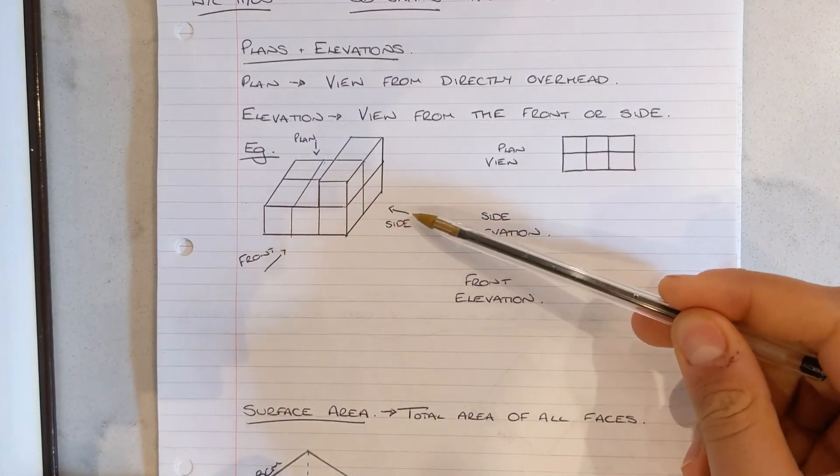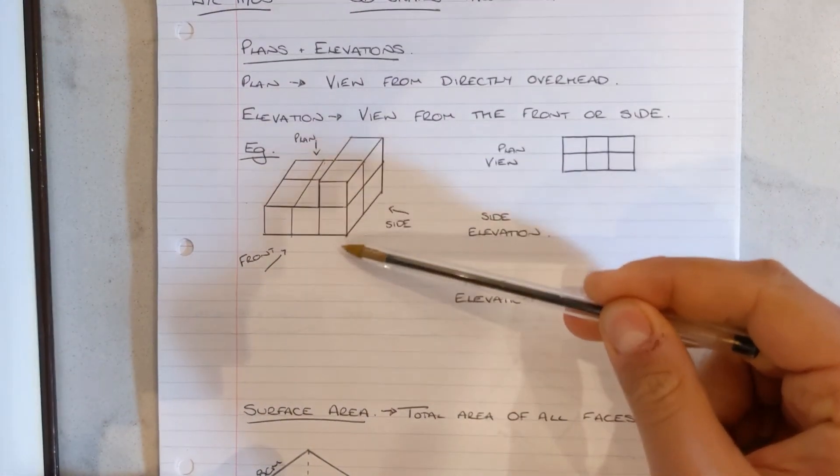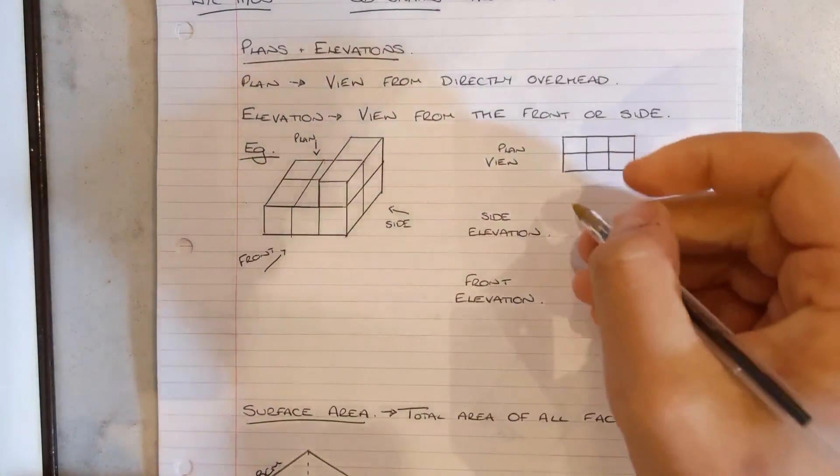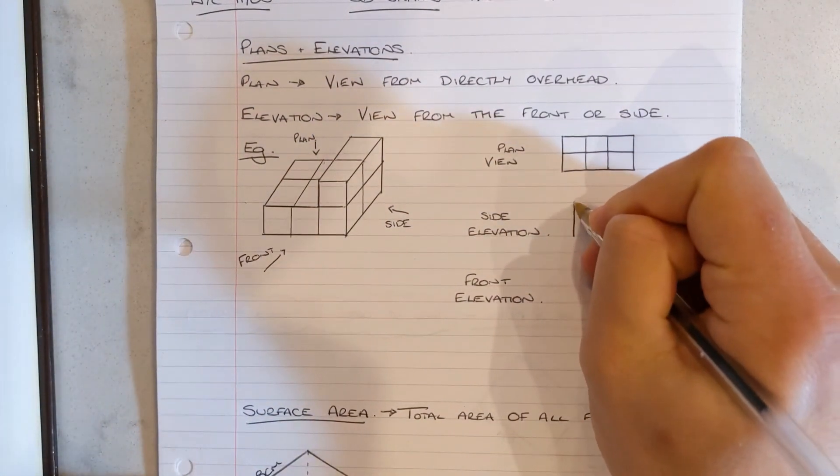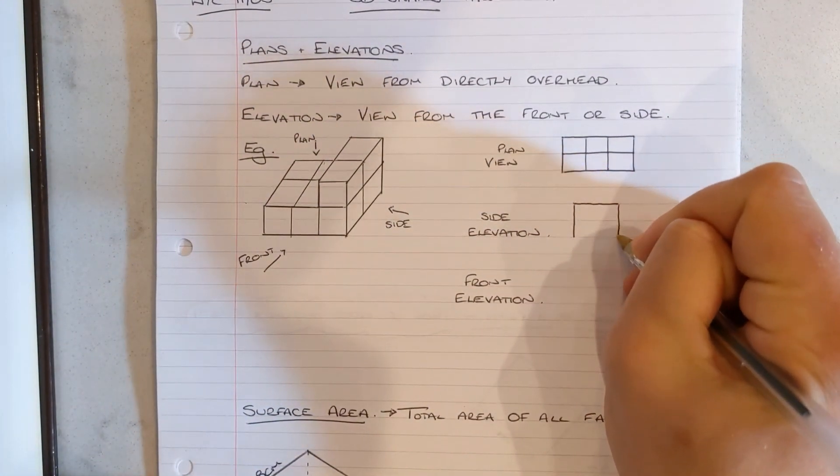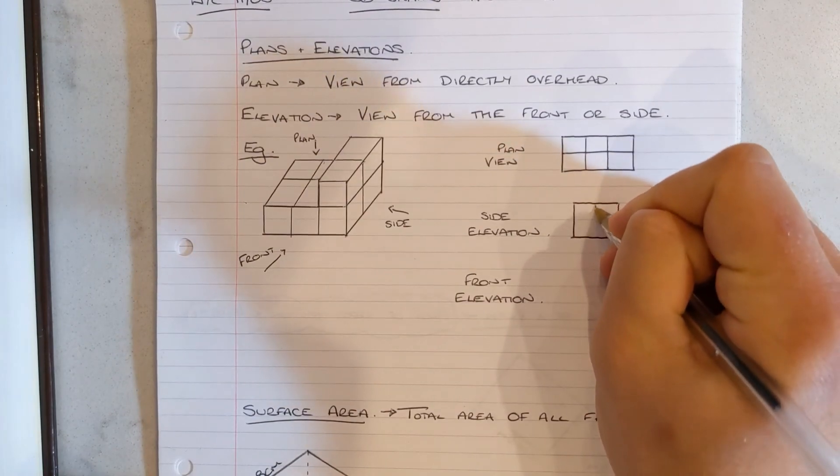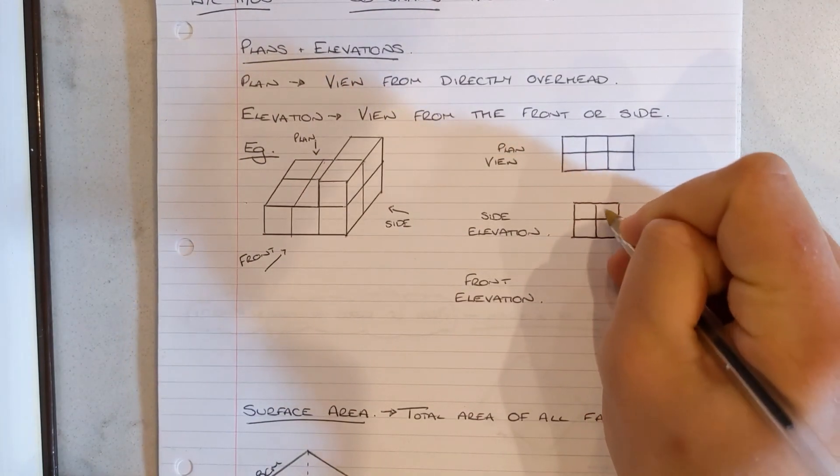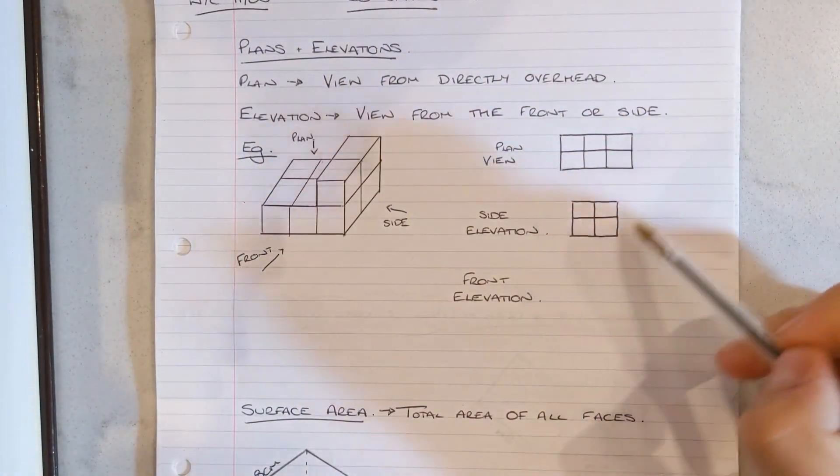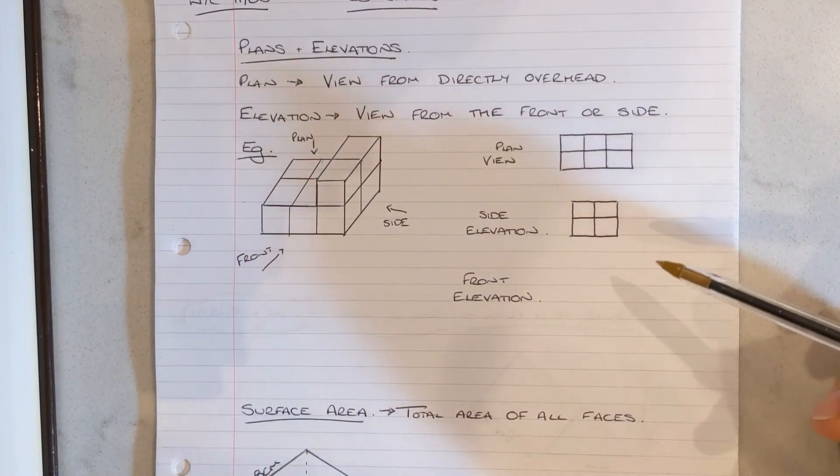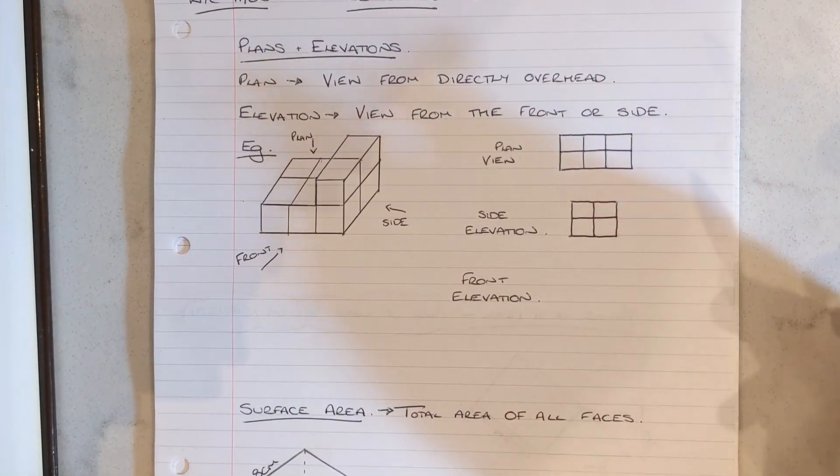My side elevation is seen from here, so I can just see a nice square which is 2 by 2. So again, using a pencil and a ruler, we can draw this out. Please don't follow my poor drawing of pen and no ruler. Make sure you are using a pencil and a ruler here, please.